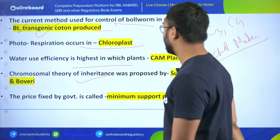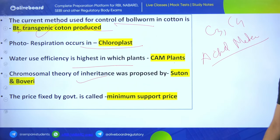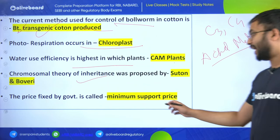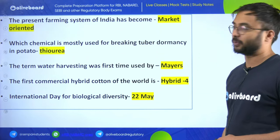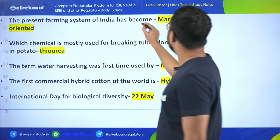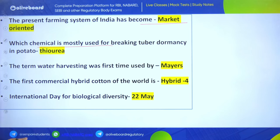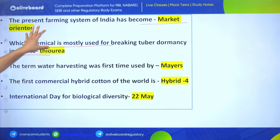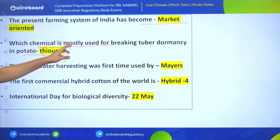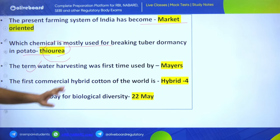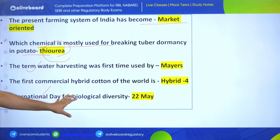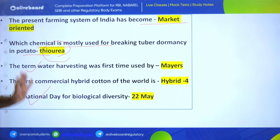BT cotton contains Bacillus thuringiensis. Photorespiration occurs in chloroplast. Water use efficiency is highest in CAM plants - CAM stands for Crassulacean Acid Metabolism. Chromosomal theory of inheritance was proposed by Sutton and Boveri. Price fixed by government is called Minimum Support Price. The chemical mostly used for breaking tuber dormancy in potato is thiourea. Water harvesting was first used by Mayans. International Day for Biological Diversity is May 22.